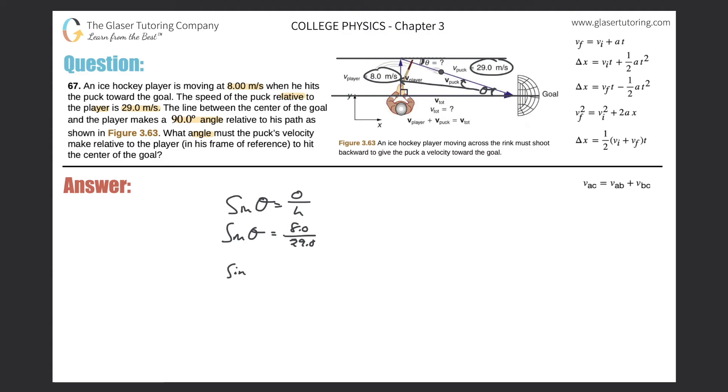So the sine of theta will equal 8 over 29. So we get a value of—we'll use two sig figs because we have to—the value in the numerator had two sig figs—so 0.28.